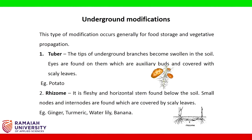Tuber: the tips of underground branches become swollen in the soil. Eyes are found on them, which are axillary buds covered with scaly leaves. Example: potato.